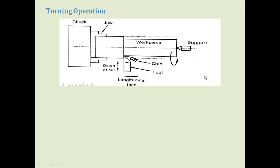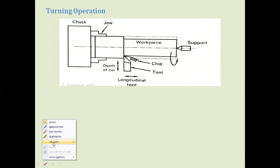In the turning operation, you can observe the initial cylindrical workpiece loaded within the chuck. As the cutting tool moves from one end to the other, metal is removed. In simple words, turning is an operation where the cutting tool moves parallel to the axis of the given workpiece — the cutting tool moves in this direction, parallel to the axis of the revolving workpiece.